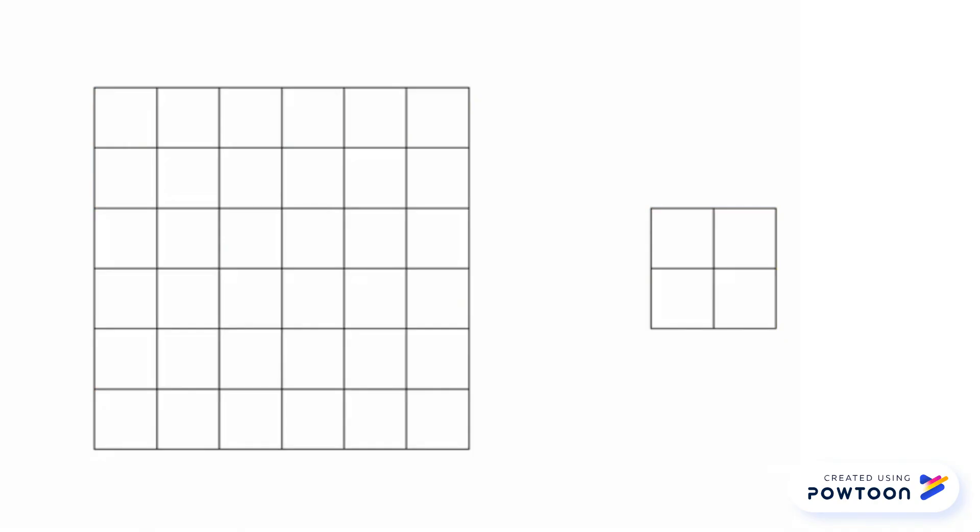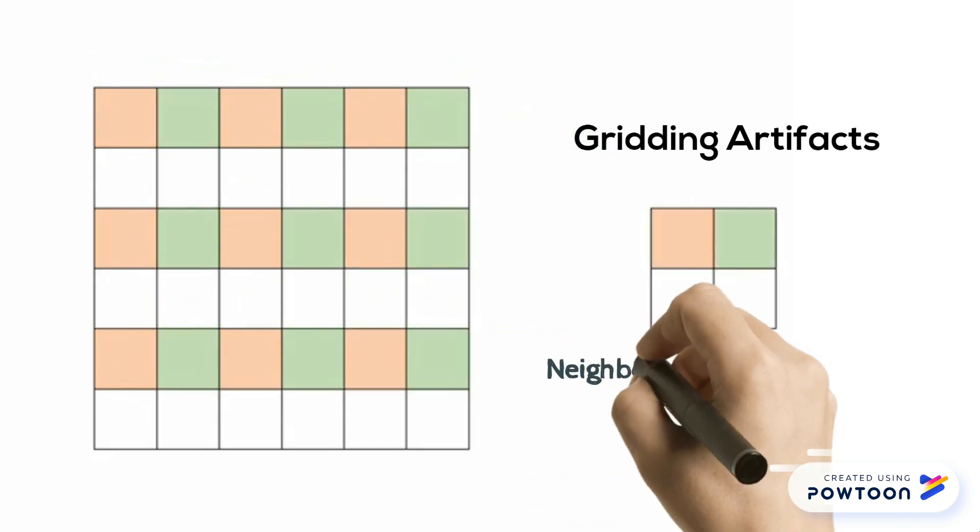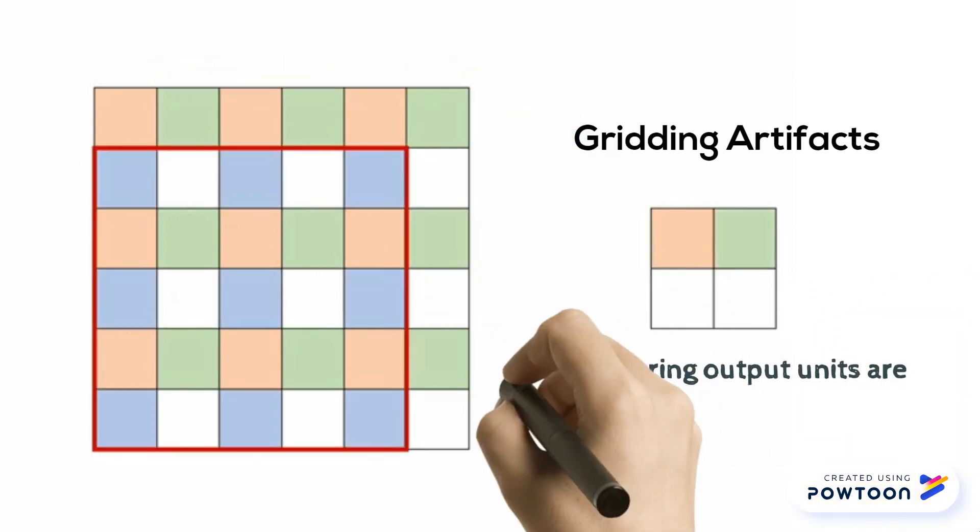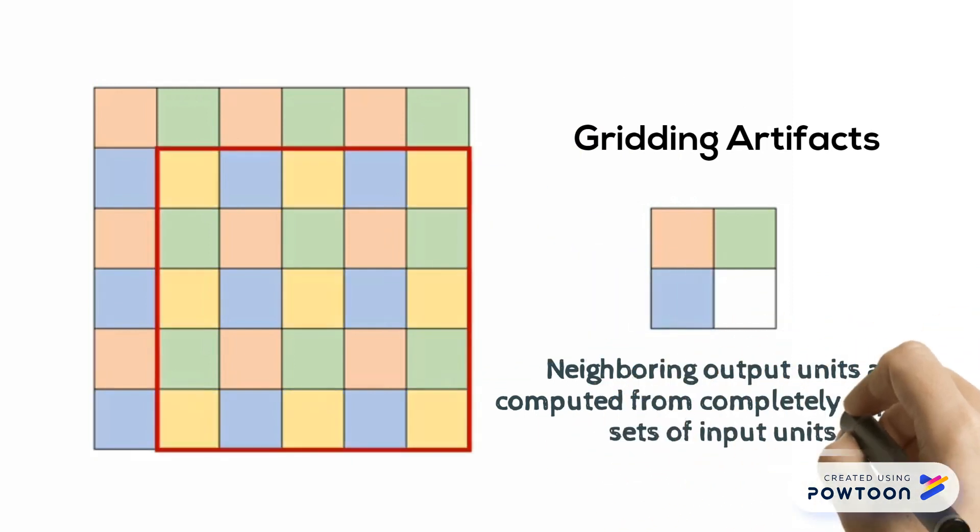However, we observe a problem of dilated convolutions named gridding artifacts. Specifically, due to the dilation, adjacent output units are computed from completely separate sets of input units. Such independency harms the performance of models using dilated convolutions.